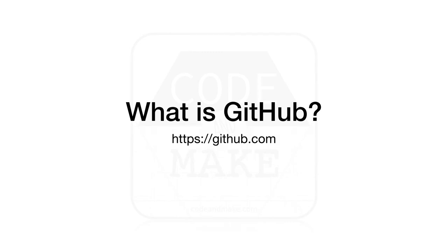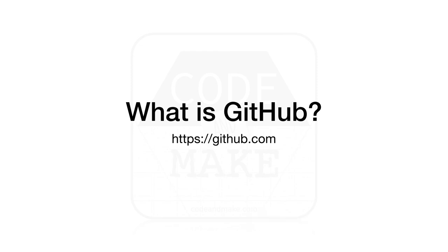What is GitHub? GitHub is a popular hosting service for Git repositories, allowing people to store and share open source projects for free. Anyone can use Git to download the source code of a public project on GitHub. In Git terminology, downloading a repository is known as cloning. Similarly, people can upload changes to repositories on GitHub, and in Git terminology, this is known as pushing.